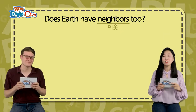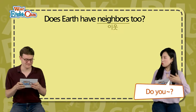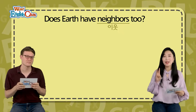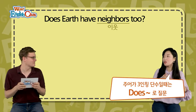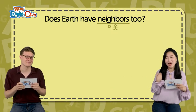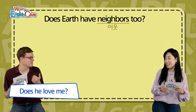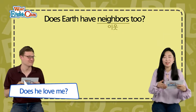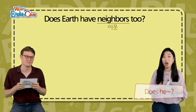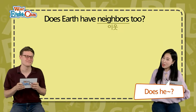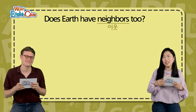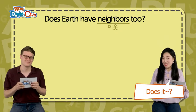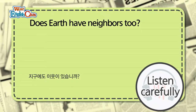여기에서 하나 짚고 지나갈게요. 바로 does입니다. 우리나라 사람들은 do you만 하다 보니까 does라고 묻는 거에 익숙치가 않아요. 주어가 3인칭 단수이면 does로 물어봐야 해요. 예를 들면, '그가 나를 사랑해?' Does he love me? 그렇죠. Does he? Does it? 이라고 얘기를 하는 겁니다.